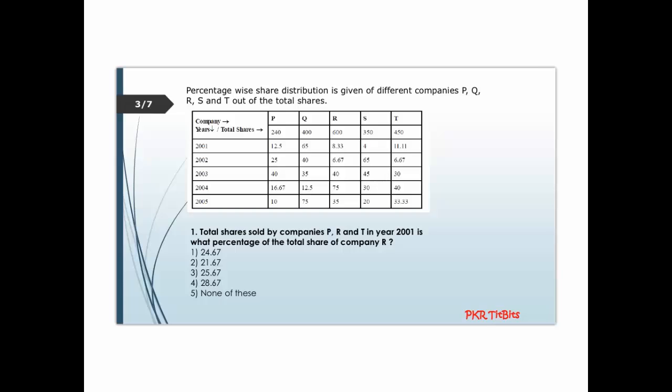First question: total shares sold by companies P, R, and T in the year 2001 is what percent of the total shares? Total shares of company R are 600. Shares of company P in 2001: 12.5 percent of 240. 12.5 percent is 1/8, so 1/8 times 240 is 30.